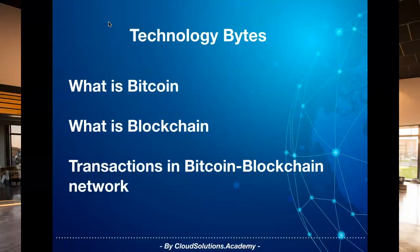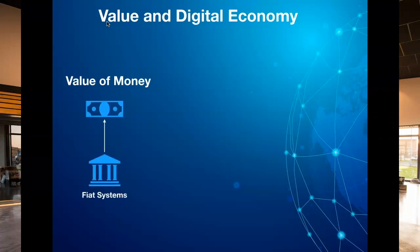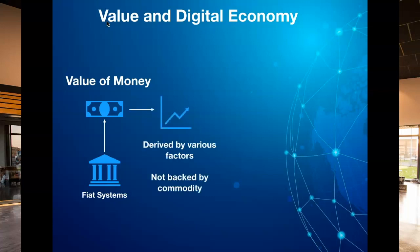So let's get started. In order to understand Bitcoin, let's first understand the evolution of money. Generations ago, other forms of value items like gold were publicly used to exchange values, which was later replaced by fiat systems, which centrally control and print legal money for making any financial transactions. This fiat money is not backed by any commodity such as gold, and the value of money is derived by various economical factors, the relation between supply and demand, and the stability of the fiat system printing the money.